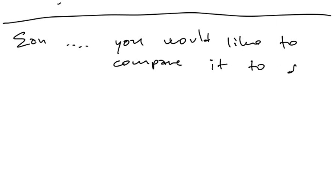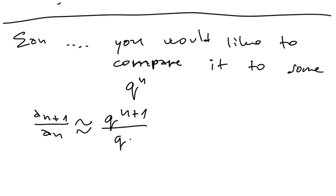So imagine that you have your series AN here and you would like to compare it to some Q to the N. There are many ways how to do it, but if the series would be very much like Q to the N, then if we consider ratio AN plus 1 over AN, this ratio should be roughly Q to N plus 1 over Q to N, meaning roughly equal Q.